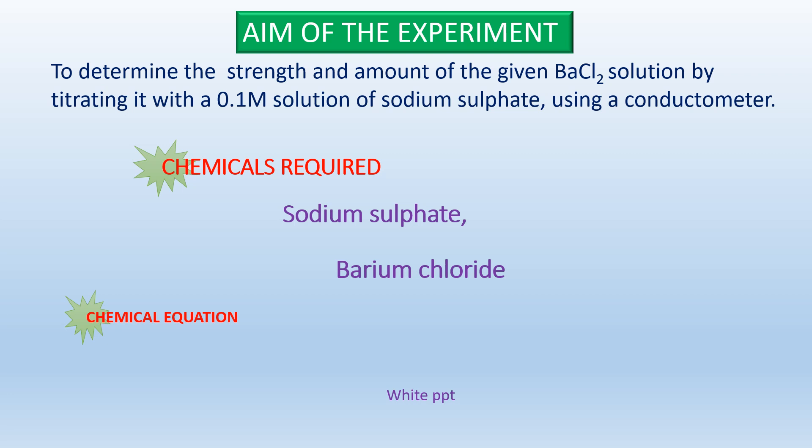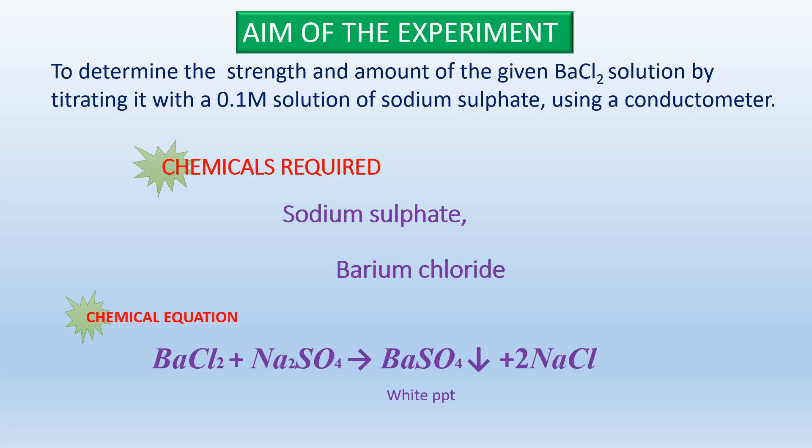The chemical equation behind it: barium chloride plus sodium sulphate gives barium sulphate and sodium chloride. Here, barium sulphate is the precipitate — it forms a white precipitate — hence the name conductometric precipitation titration.